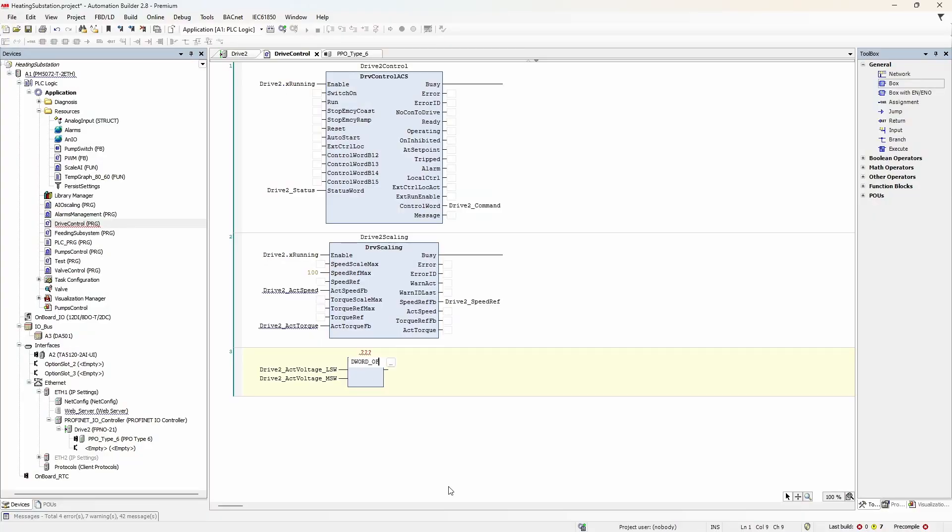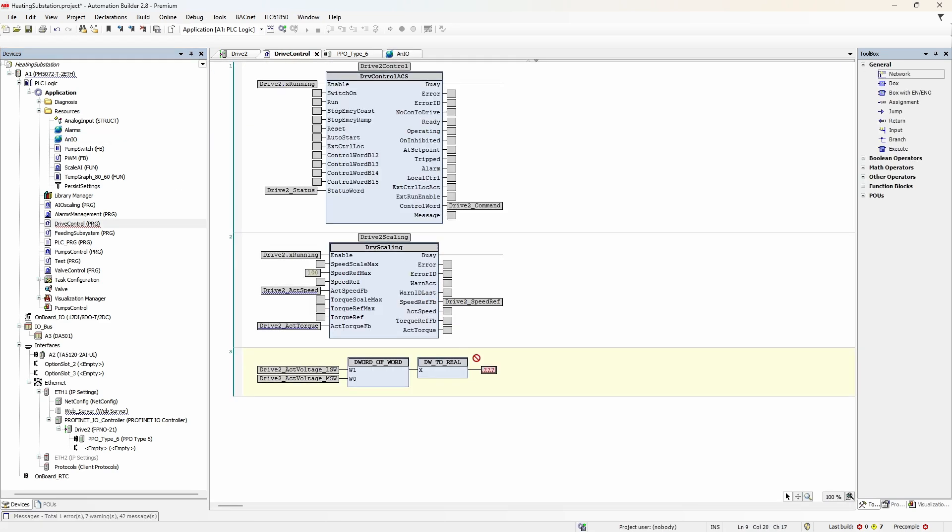The last thing to take care of is our voltage value. If you remember, we read two 16-bit words of a 32-bit floating point value. We could have written this conversion ourselves, but I prefer the lazy way: use what already exists. First combine two words into a double word and then interpret the double word as a real data type. And then the result goes to the global variable. All the functions are from Oscat basic library we've used before.